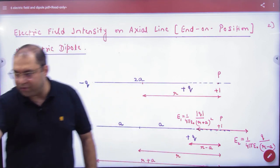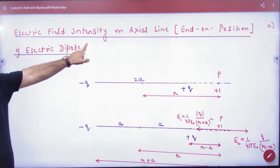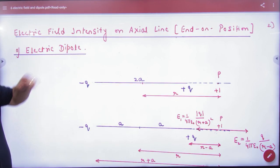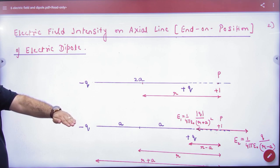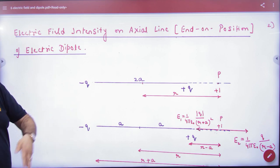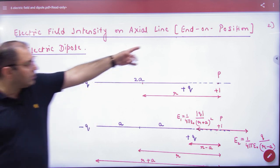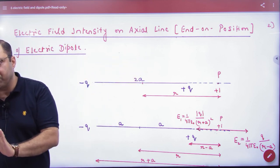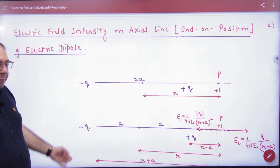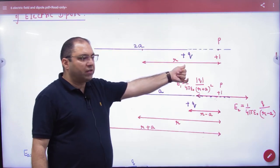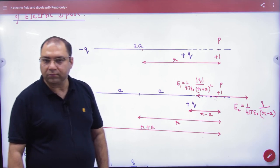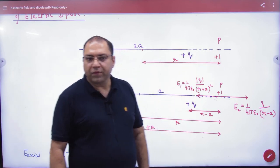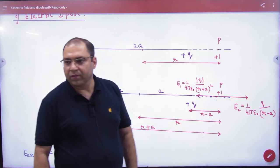So derivation number 1, this derivation is to find electric field intensity E on axial line. Where do you put on the axis? So what do you call it? Axial line. Axial line is the other name of end-on position. So how do we do it? You have a dipole minus q plus q separated by 2a. This is the axis.